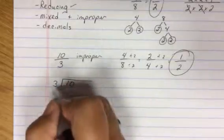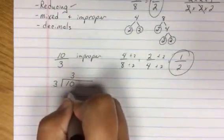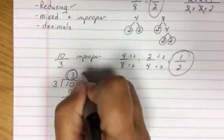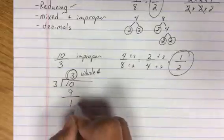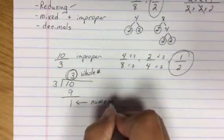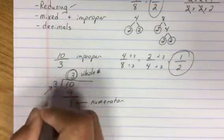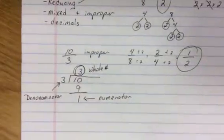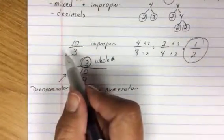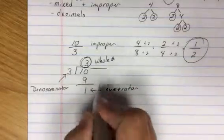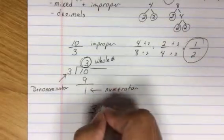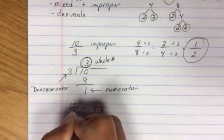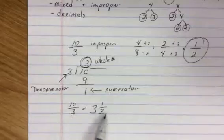I divide the bottom into the top. I do not want to go decimal. So three goes into ten three times. Three times three is nine. I get a remainder of one. This is my whole number. This is my numerator. And this was my denominator. Still is my denominator. So to put ten thirds into a mixed number, a mixed number has a whole number and a fraction. So my whole number is three. My numerator or top of my fraction is a one. My bottom is still three. So ten thirds equals three and one third. This is an improper. This is a mixed.